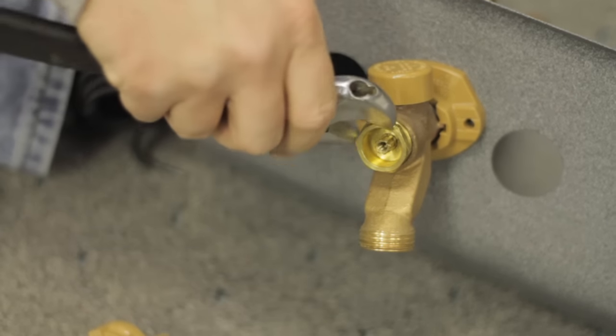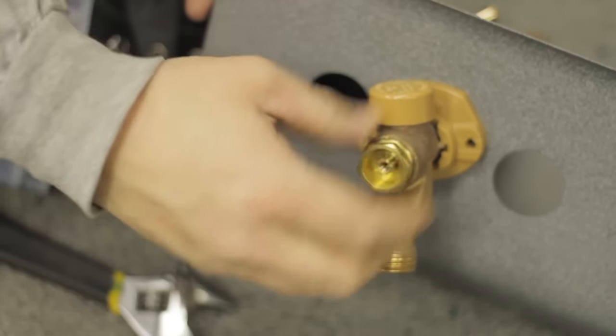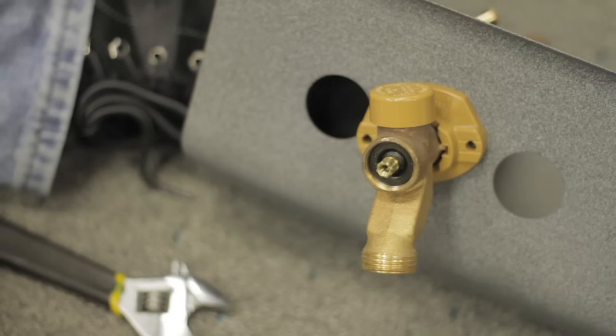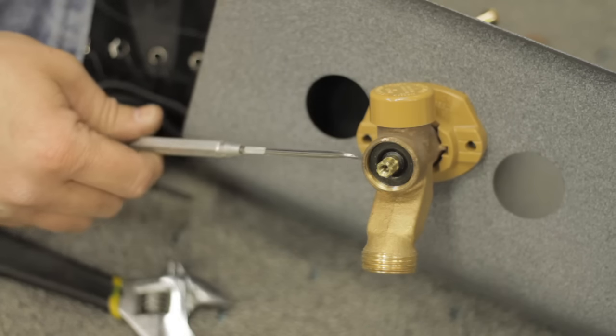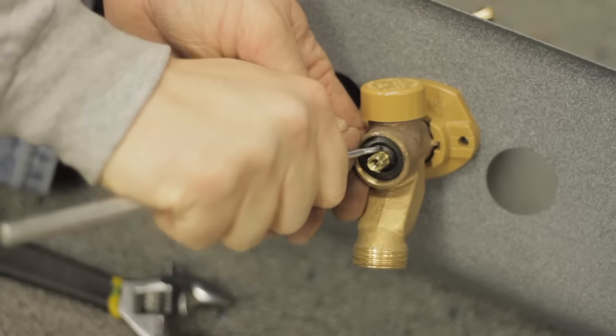Next you'll have a packing nut. Remove your packing nut. Behind the packing nut is a packing material. Now some of them are going to be made of rubber, some of them are going to be made of a string or teflon material.